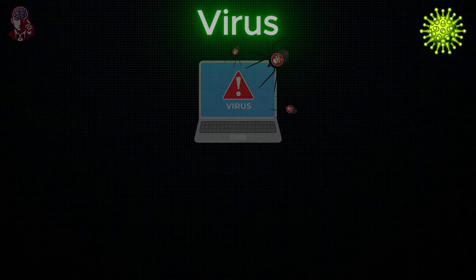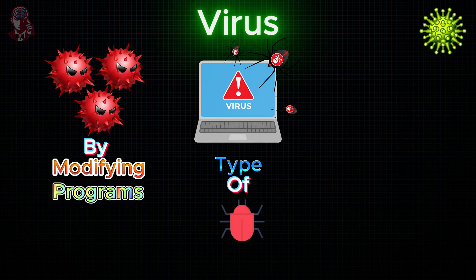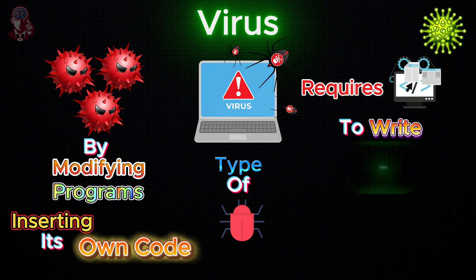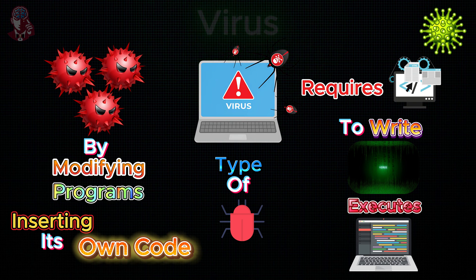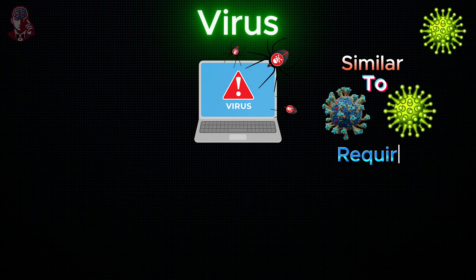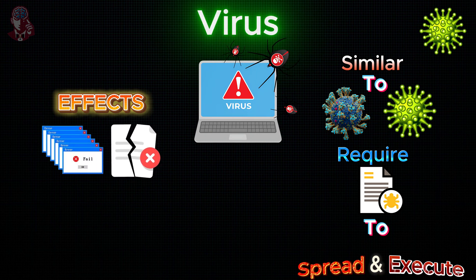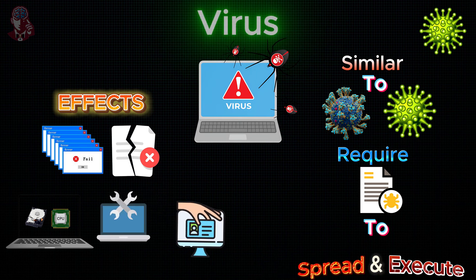Virus: A computer virus is a type of malware that replicates itself by modifying other programs and inserting its own code. It requires a host program to write its code into and executes when the host runs. If replication is successful, the affected areas are considered infected. Similar to biological viruses, they require a host to spread. Common effects include system failure or crashes, corruption of data, wasting CPU or memory resources, increasing maintenance costs, and stealing personal information.